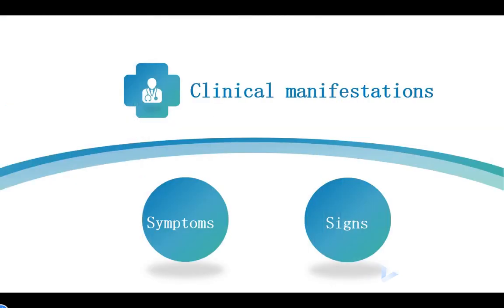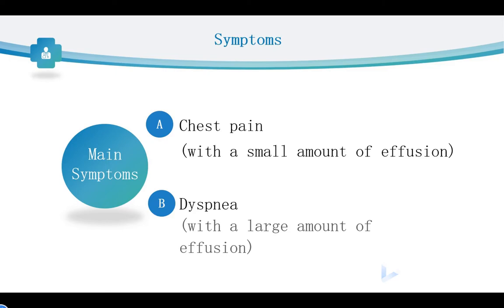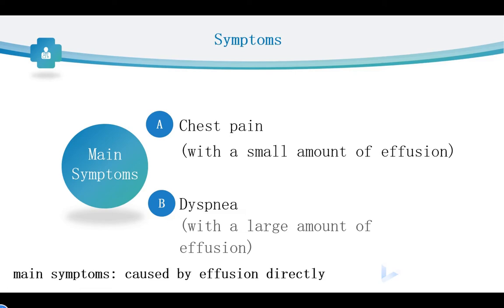Next, let's move to the clinical manifestation of pleural effusion. First, let's look at the symptoms. The symptoms of pleural effusion can be divided into two groups. The first group is called main symptoms, including chest pain and dyspnea. These main symptoms are caused by the effusion directly.